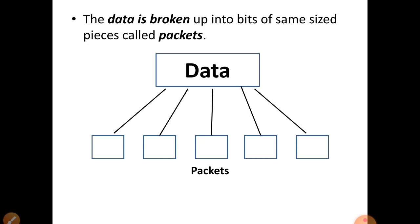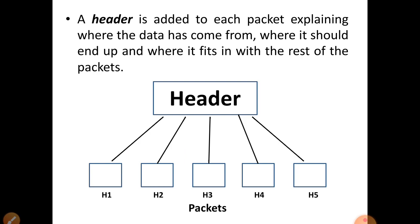The next point is that a header is added to each packet, explaining where the data has come from, where it should end up, and where it will fit in with the rest of the packets. As you can see here, there are 5 pieces, each with a header — header 1, header 2, header 3, header 4, header 5 — added to the individual packets so they know where to fit in with the rest.